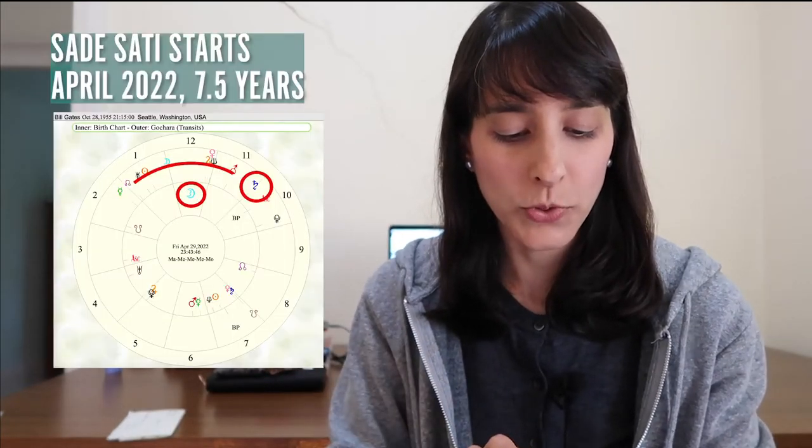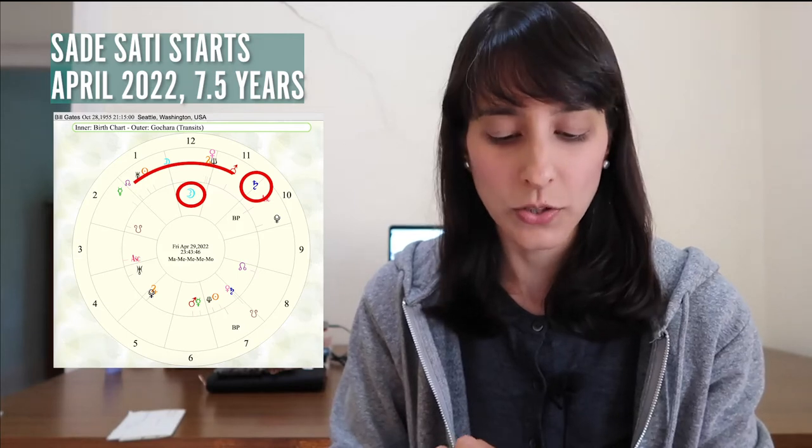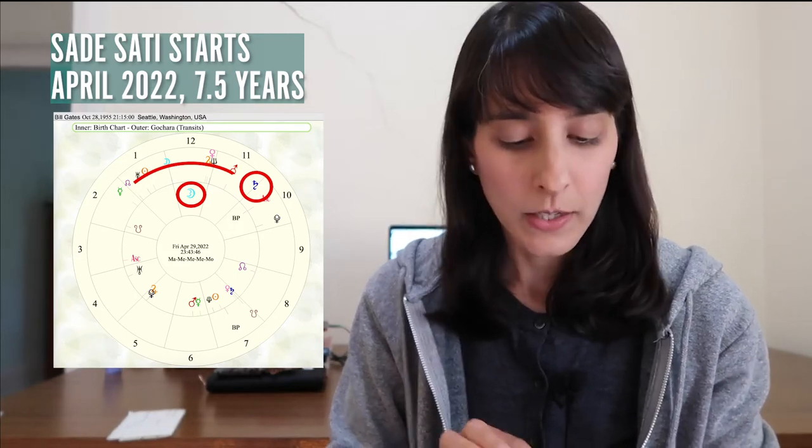The question is: do you have a vaccine for Saturn's wrath? If anyone's going to need one, it might be Bill Gates. Saturn will be 12th from his moon on 29th April 2022 — this is the start of his Sade Sati period. For those who know Vedic astrology, Sade Sati is a seven-and-a-half-year period where Saturn passes over your moon. It can elevate you, but it can be a really rotten time for anyone who is a liar or thinks they're God.